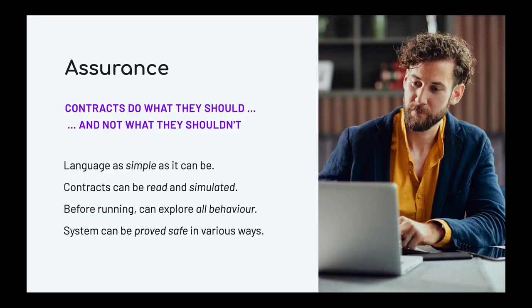We've designed the language to be as simple as it can be and the implementation reflects that. Contracts are readable and easily simulated, so we can present users with a very clear picture about how their Marlowe contracts will behave. Because contracts are particularly restricted, we can actually explore every possible behaviour path before a contract is executed — giving complete guarantees about behaviour across every possible execution sequence. It's also more straightforward to write mathematical proofs of various kinds of safety, which is the strongest criterion: a mathematical proof that the system will do certain things and won't do others.